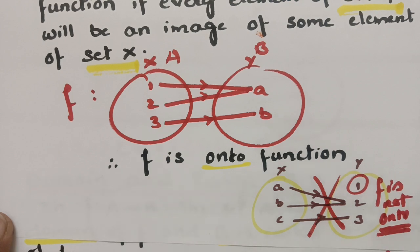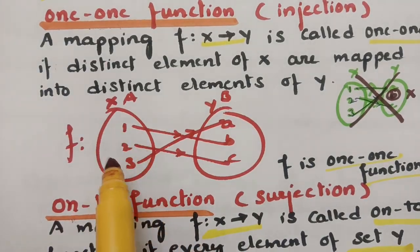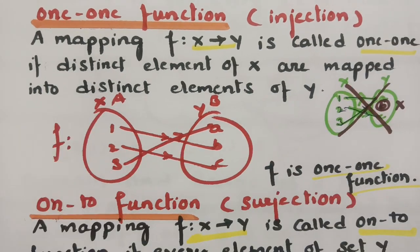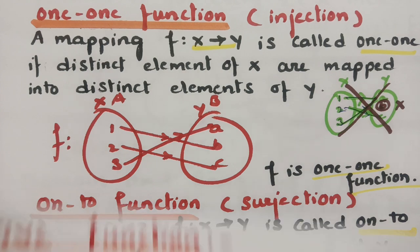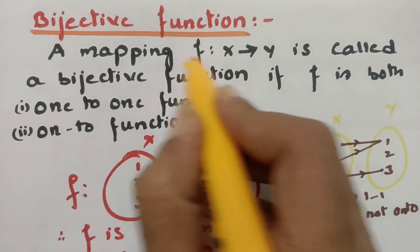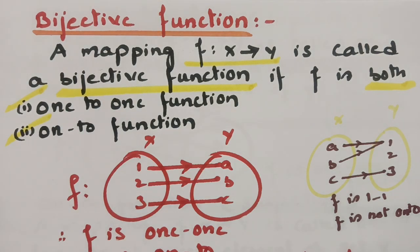To summarize: for onto function, every element in set y must have an image in set x. For one-to-one function, every distinct element of x should be mapped with different elements in y. A bijective function (bi means two) must hold both the one-to-one property and the onto property. A mapping f from x to y is called a bijective function if f is both one-to-one and onto.